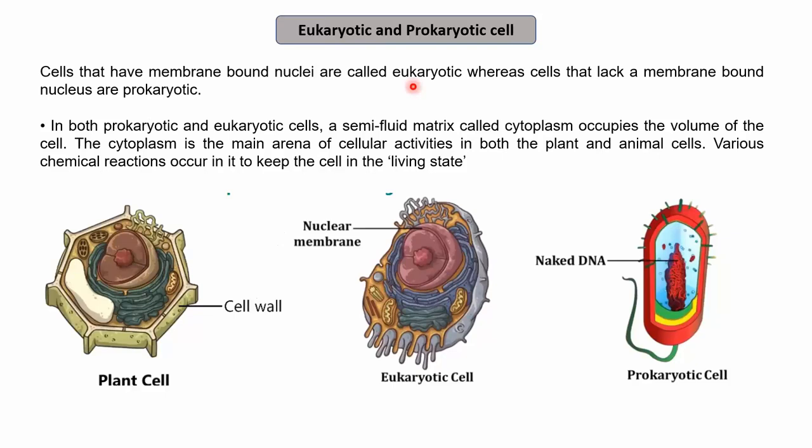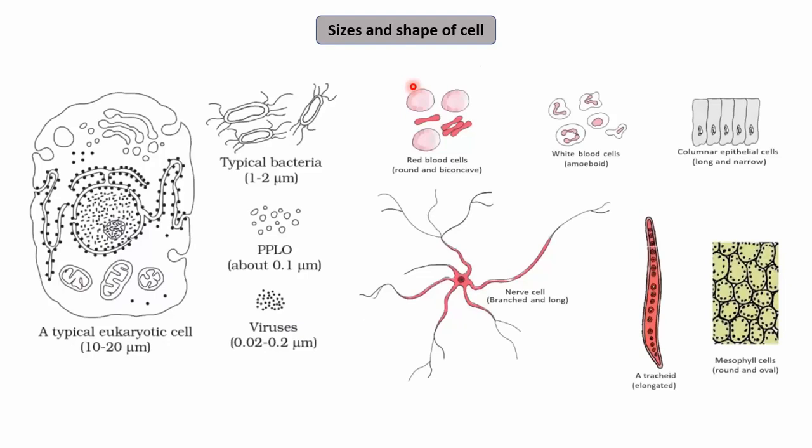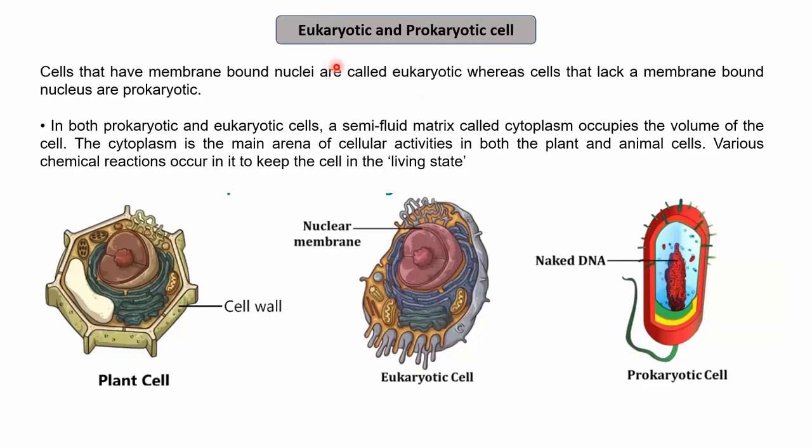The next topic is the different types of cells. Cells can be divided into two types: eukaryotic and prokaryotic. The basis of classification is whether they have a membrane-bound nucleus. Cells that have a membrane-bound nucleus are called eukaryotic.